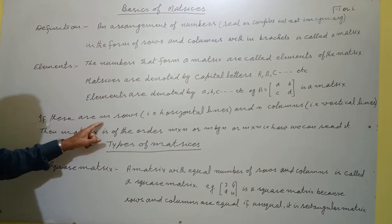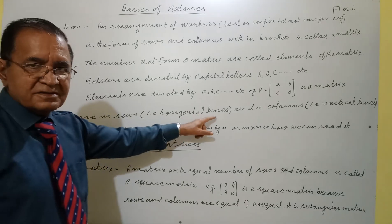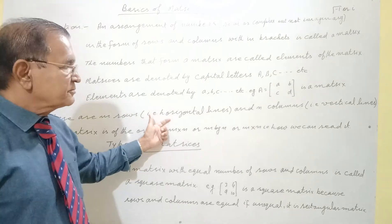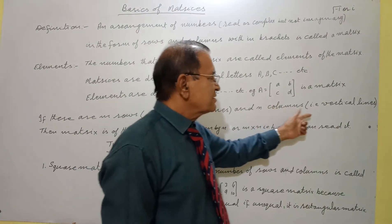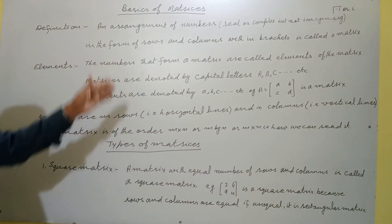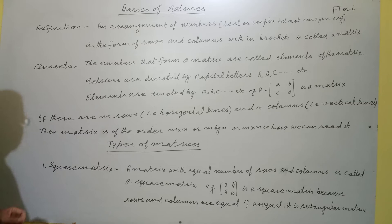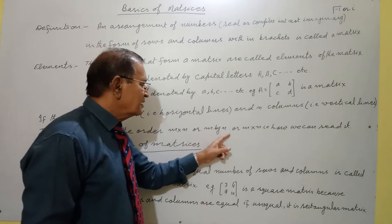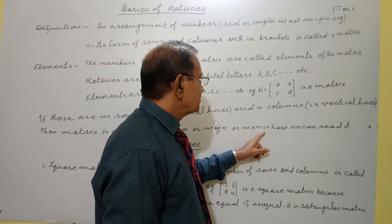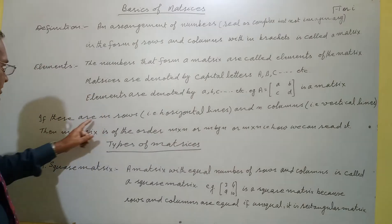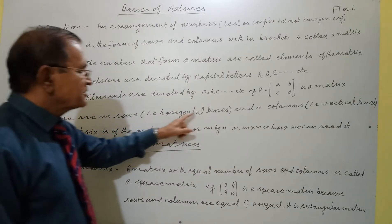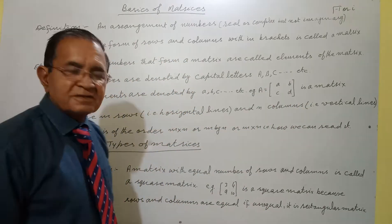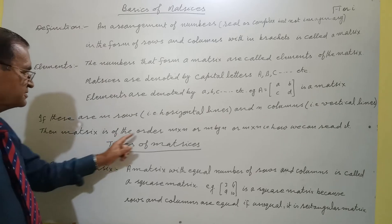If there are M rows — that is horizontal lines — and N columns — that is vertical lines — then the matrix is of the order M into N, or M by N. We always write rows first, then columns.